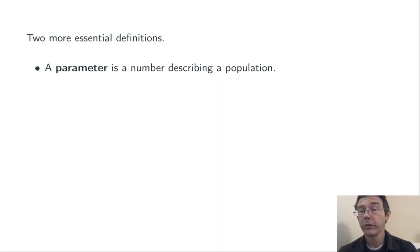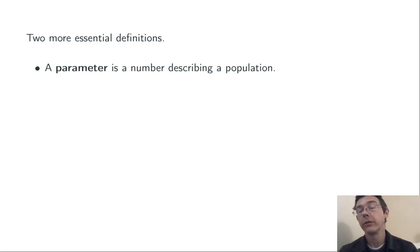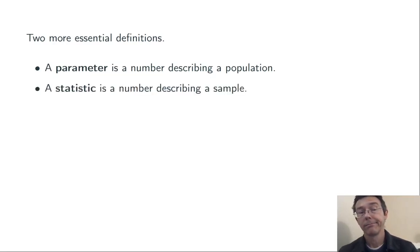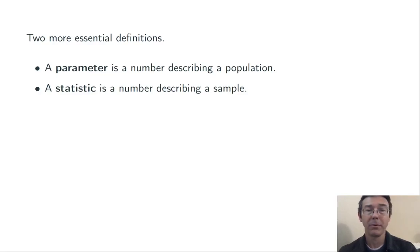Two more essential definitions. First of all, a parameter is a number describing a population. Second of all, a statistic is a number describing a sample.